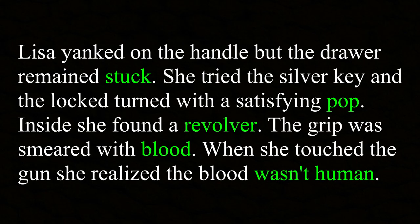'When she touched the gun, she realized the blood wasn't human.' Each sentence ends with a punchline: the drawer is stuck, it unlocks with a pop, she finds a revolver, she notices blood, and she realizes the blood isn't human. These keep the reader invested and subconsciously signal that every sentence will end with something interesting. You don't have to do this throughout your entire story, but in particularly exciting scenes, arrange your sentences so they end with impact.